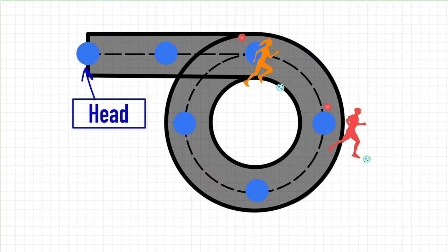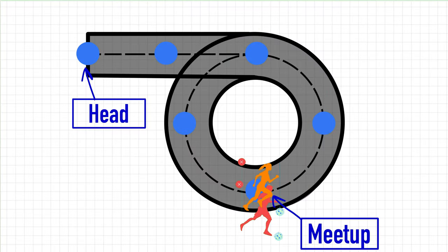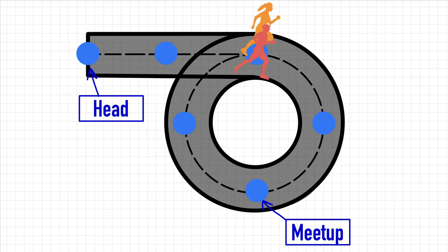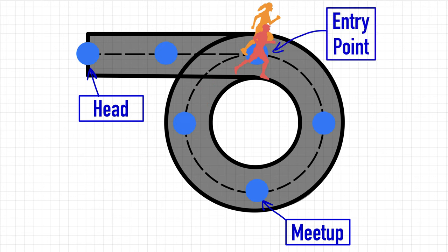The second part of Floyd's algorithm is a little more tricky. Once we find the position where the two pointers meet, we stop. We put one pointer at the head of the list and one pointer at the meet point, then move both pointers one position with each iteration. Floyd's algorithm relies on the fact that at some point they will meet, and where they meet is going to be the start of the cycle — which is exactly the entry point we are looking for.